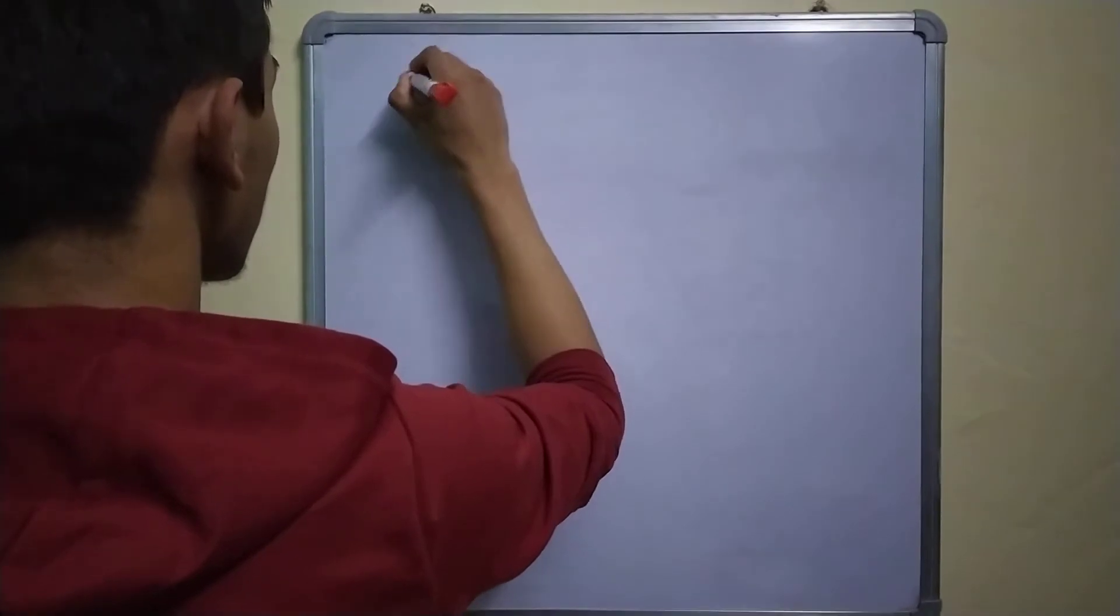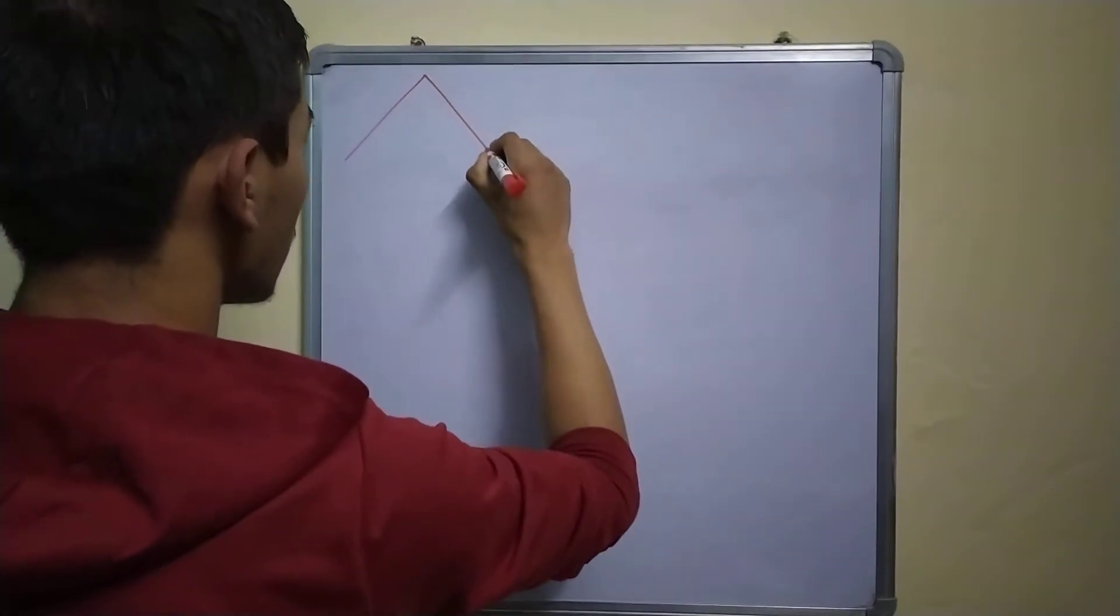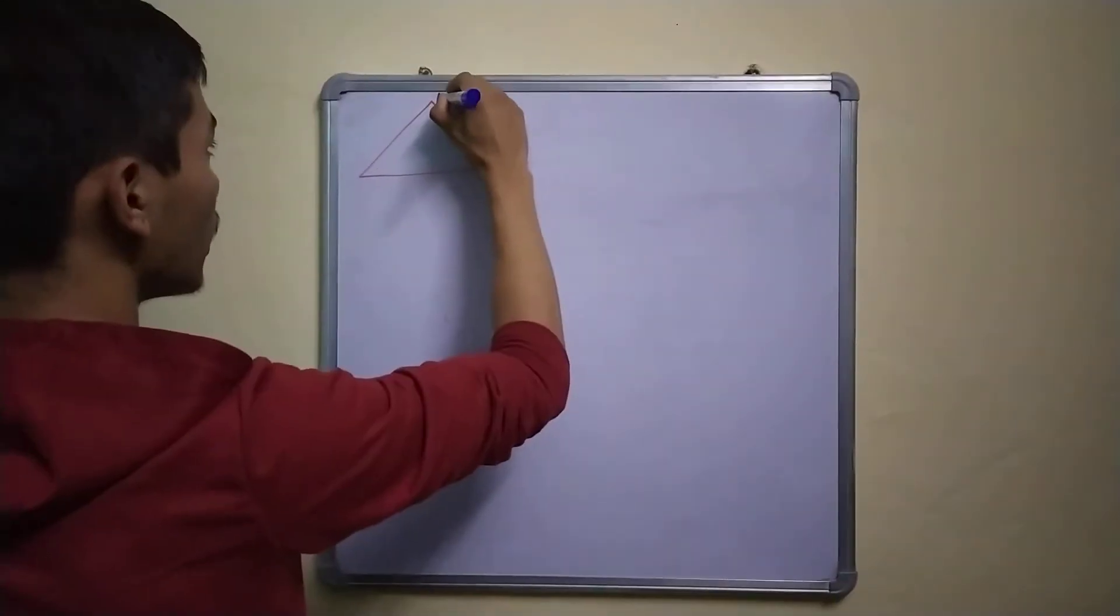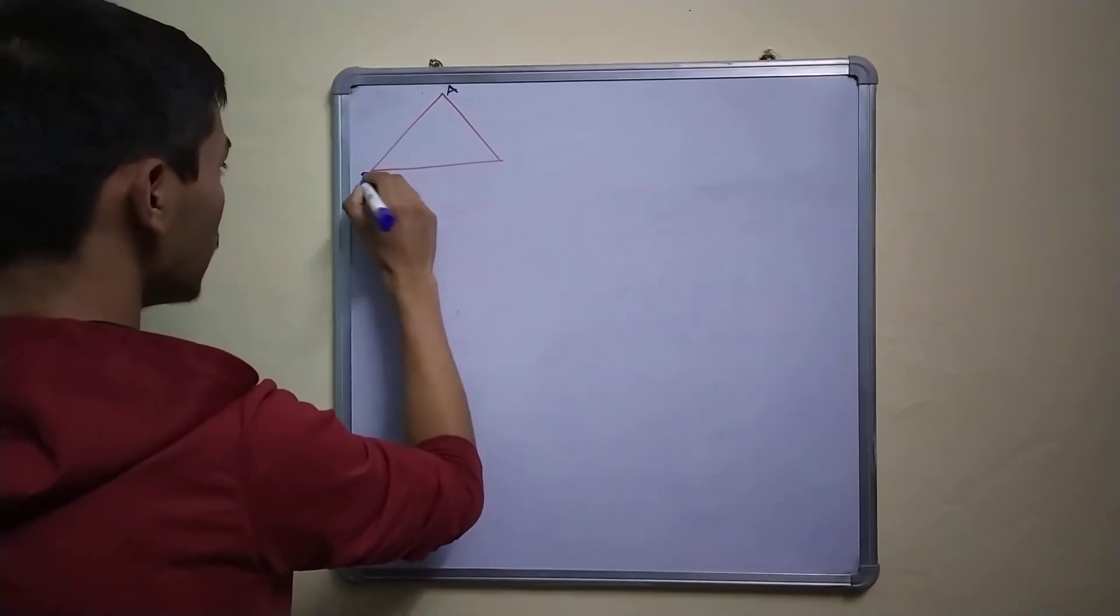Consider we have a triangle. Let me label them: A, B, C.